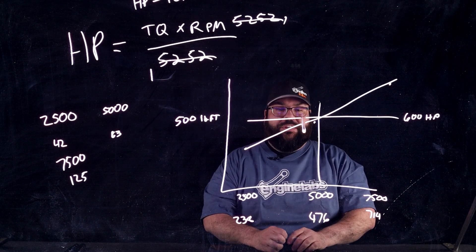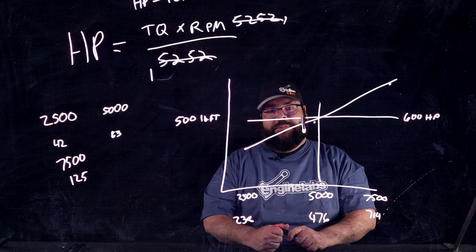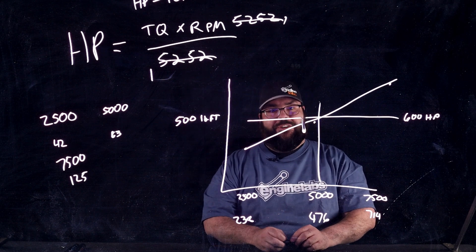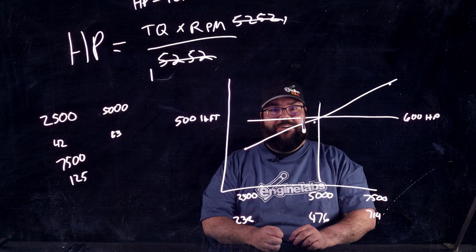If it doesn't cross at 5252, it's a make-believe dyno. Because the math says it has to cross at 5252.